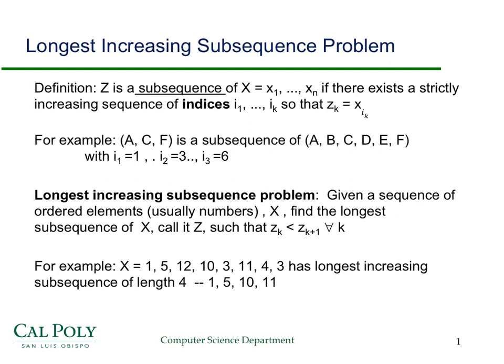Before we get started it's important to review the definition of a subsequence. Given some sequence x1 through xn, it can be numbers or letters or symbols, a subsequence of that sequence exists if there is an increasing sequence of indices i1 through ik such that for that subsequence zk it equals xik. That's the formal definition. The idea is really simple. It's a subset of the entries in the original sequence that are kept in the same order.